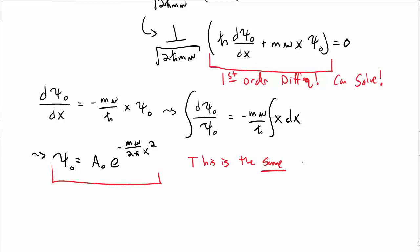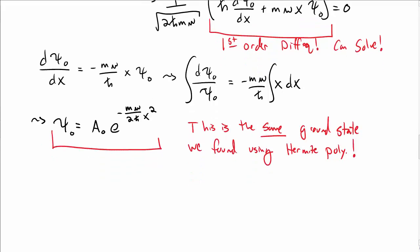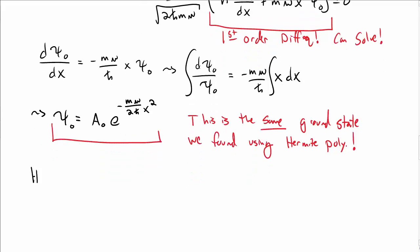Notice that this is exactly the same ground state solution and ground state wave function that we found when we solved the quantum harmonic oscillator using Hermite polynomials. Here we found it in a quote unquote easier way, at least a little bit more clever way that didn't have to do with Hermite polynomials.